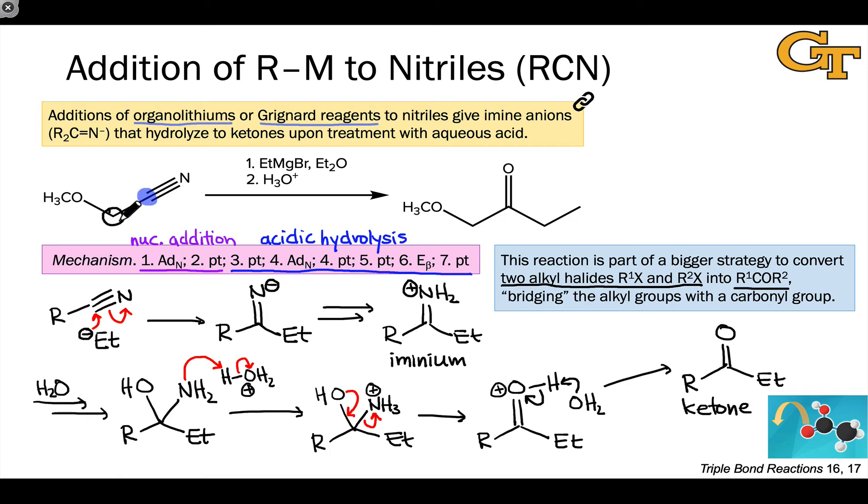The way we do this is by using R1X as an electrophile in a substitution reaction with cyanide. CN minus plus the first alkyl halide forges this first nitrile structure. We can then take the second alkyl halide and treat it with magnesium to generate a Grignard reagent. And after addition of the Grignard reagent to the nitrile followed by acidic hydrolysis, we end up with this ketone product.